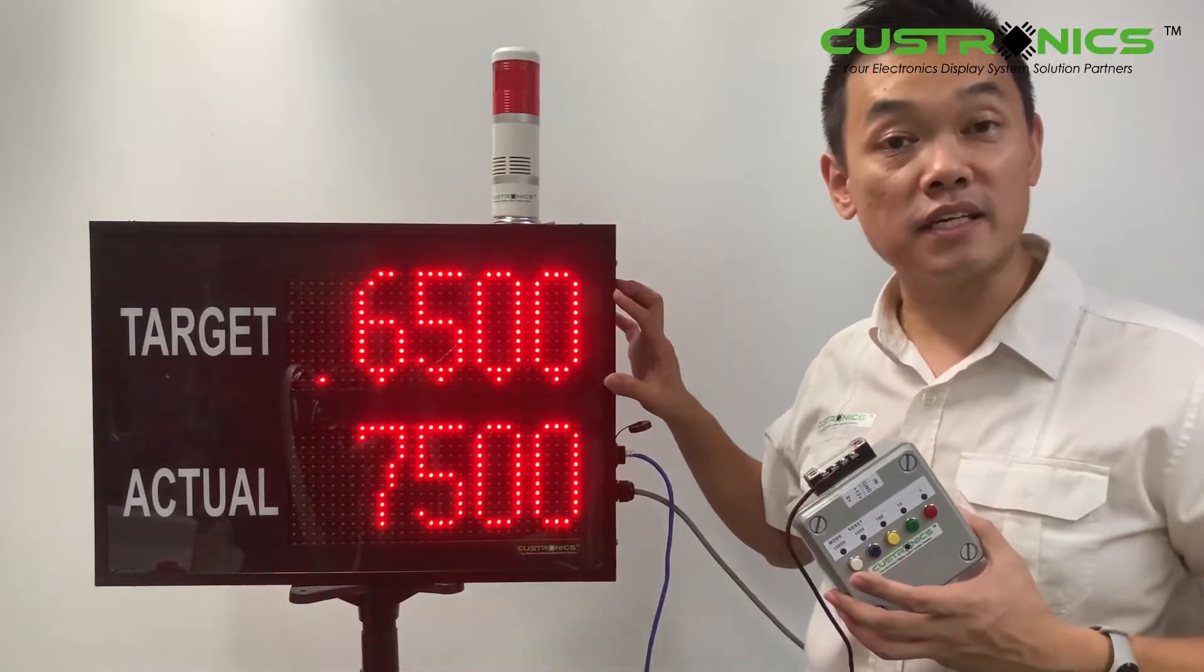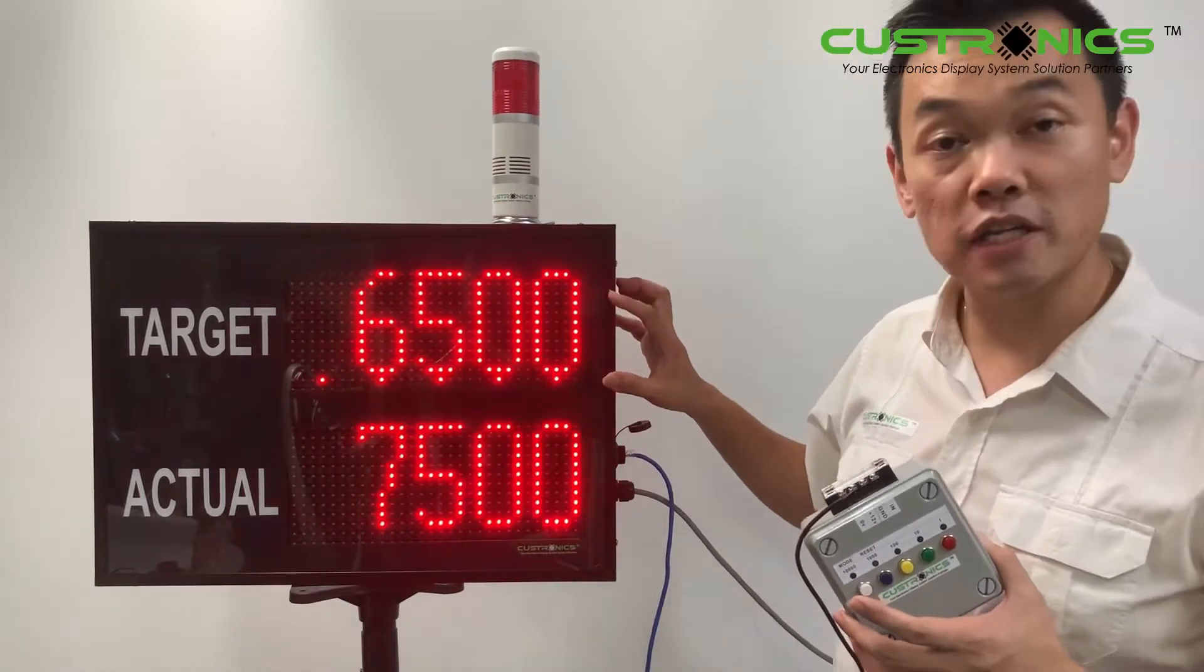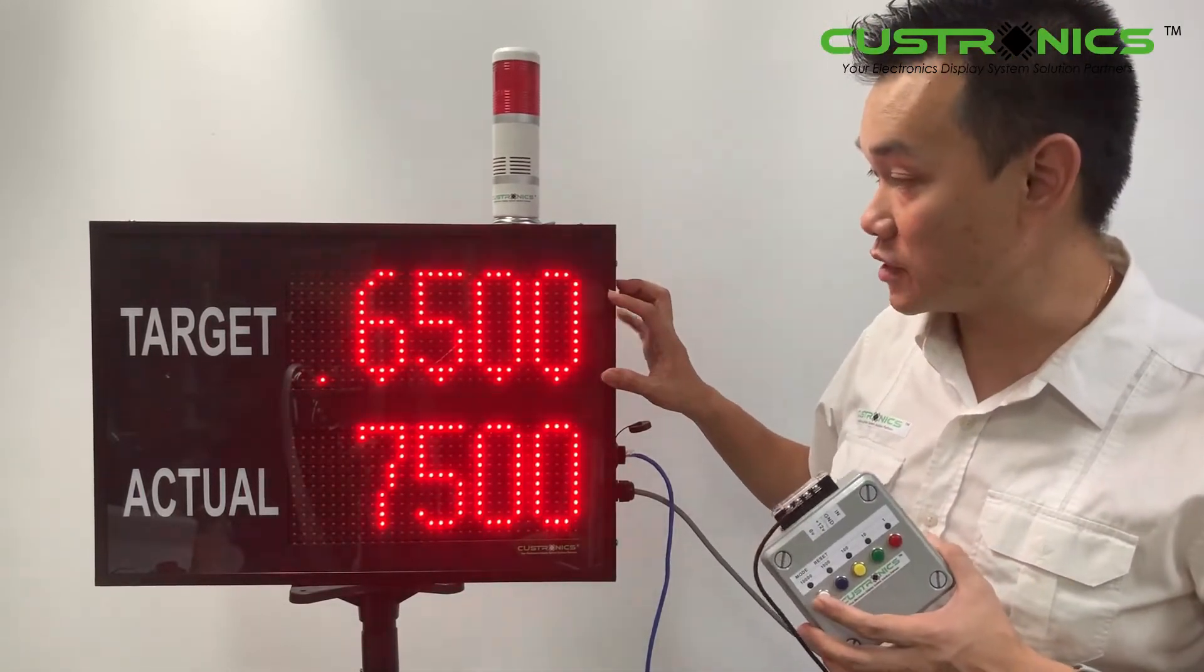Because the number we just set is more than this, that's why it's buzzing. So now it's 6450.